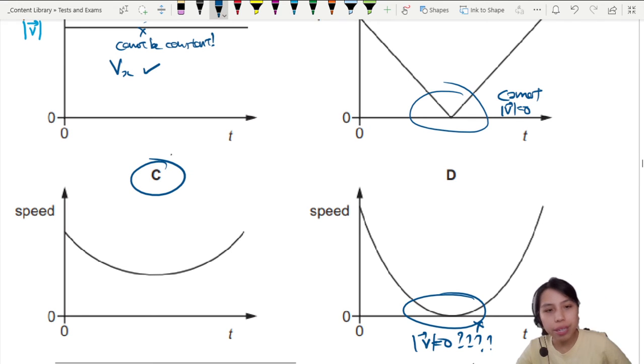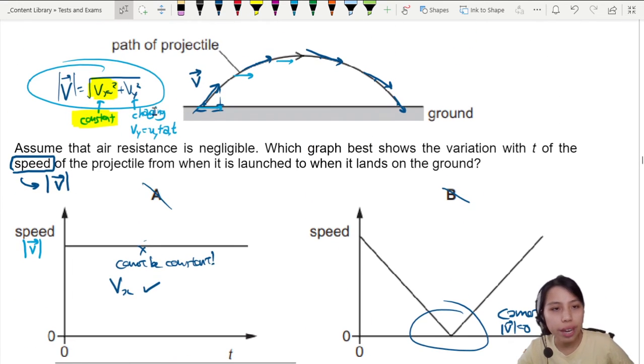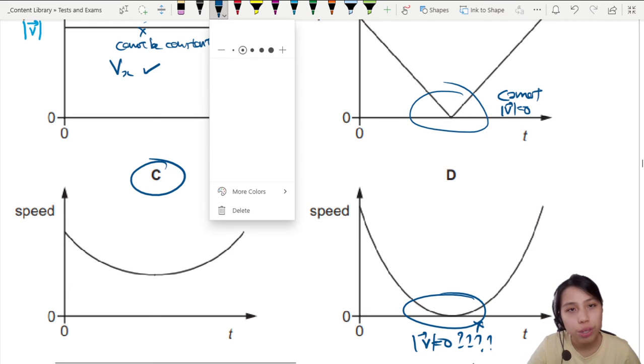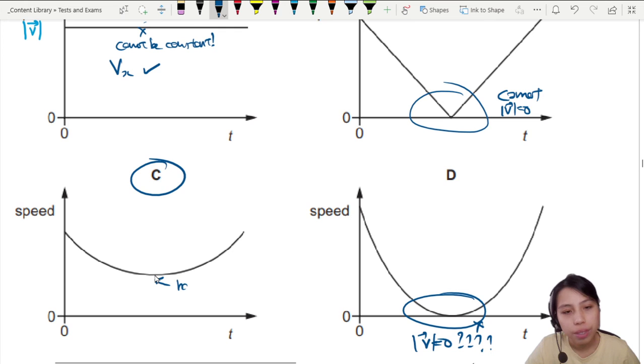This curvy curvy shape is related to the change in this vertical velocity that's changing. But you will never reach zero because of the horizontal component. So I'm going to write here, there's always a horizontal component.